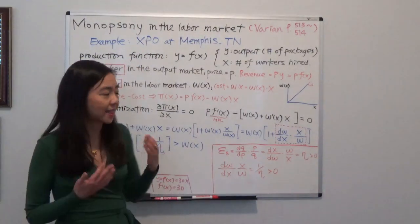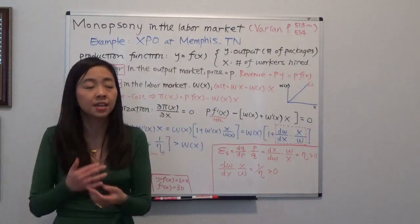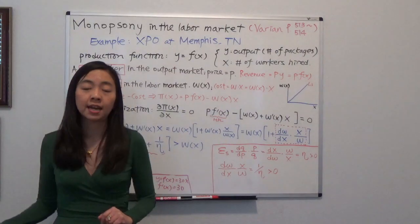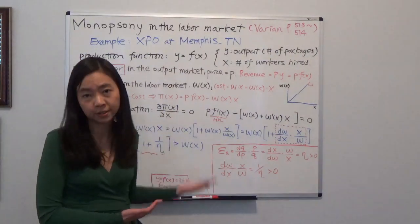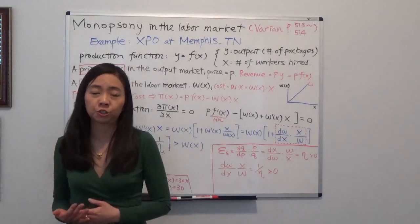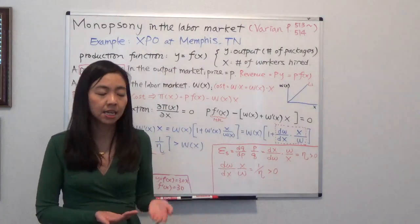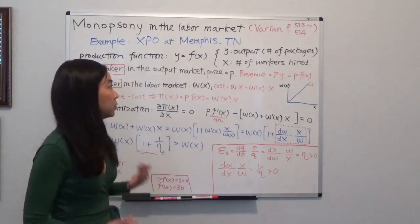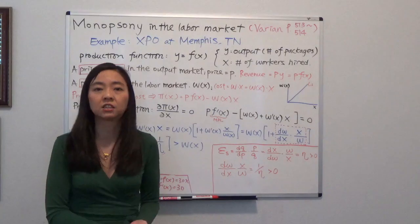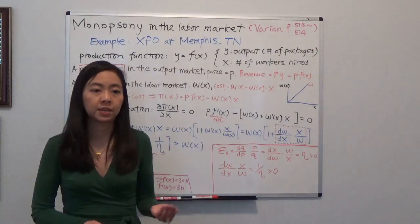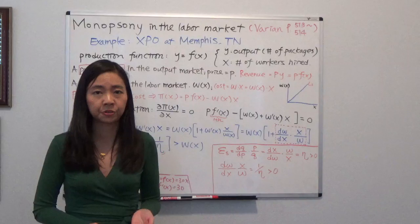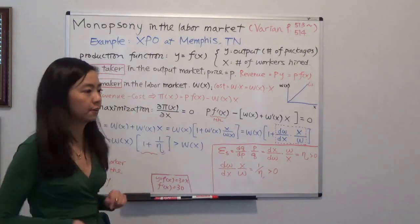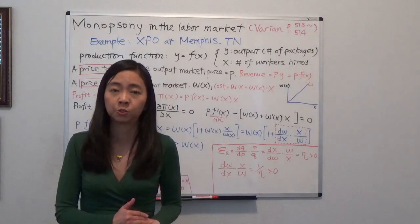So you can imagine in that case, the company has an upper hand, and they are really able to suppress your wage. And according to New York Times, a lot of women work there during their pregnancy. And even though the doctor asks women not to do any heavy lifting, these doctor's notes are ignored by the supervisors at XPO, which results in a lot of miscarriages of these women. And also one woman had to go through a premature birth, and she had to watch her baby die within 10 minutes. So you can imagine if you are working for monopsony, they are really able to suppress your wage.